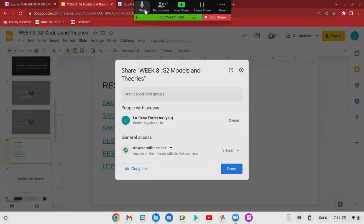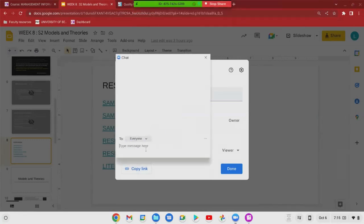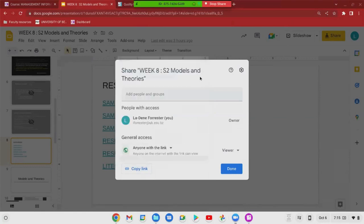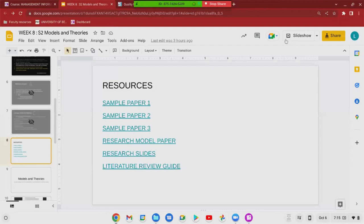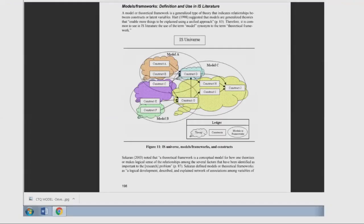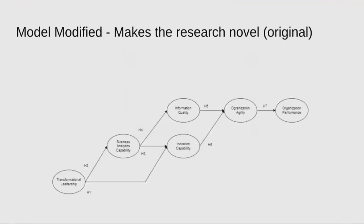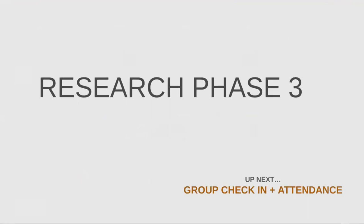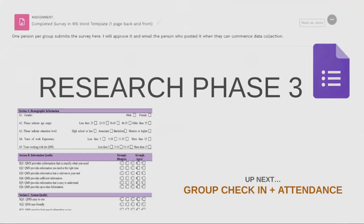The model is what we use to establish our research framework, and from it we can determine the end results. We need hypotheses to guide the research, which will be either proven or disproven at the end. Phase three is where we're at: you've identified your organization, you're working on your literature review, and now phase three asks you to go out and collect data. You're being asked to create a Google Form with a questionnaire based on the DeLone and McLean model, which has all the sections we mentioned earlier.